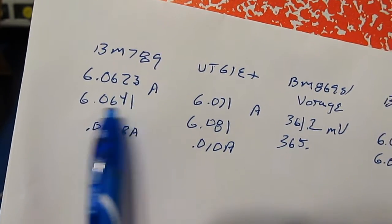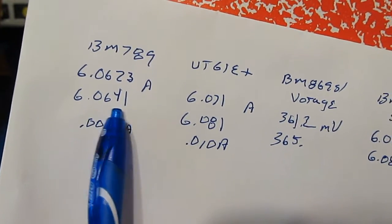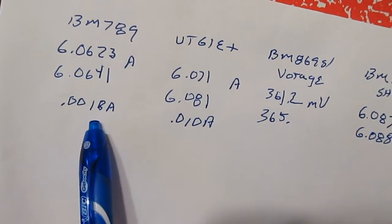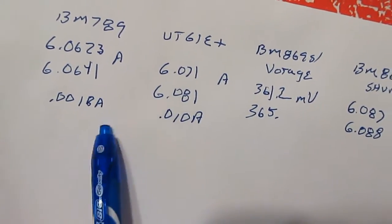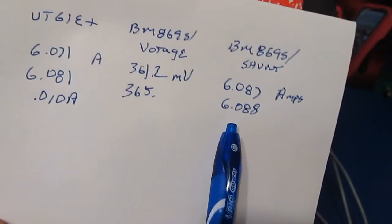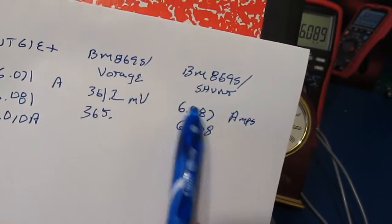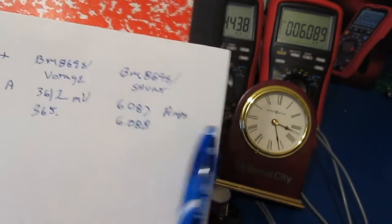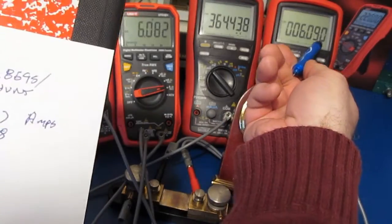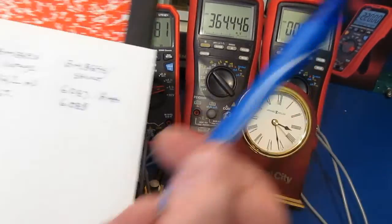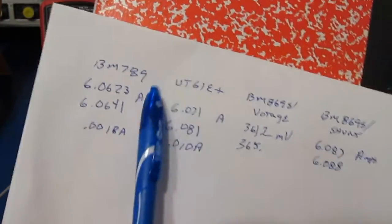Let's have a look at the 789. It's gone from 6.0623 to 6.0641 for a difference of roughly 1.8 milliamps, so about two times higher than what we saw with the shunt. We're right down in the noise with this though, you can see this bouncing around a couple of counts.